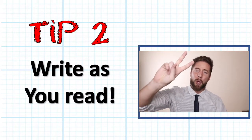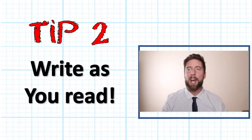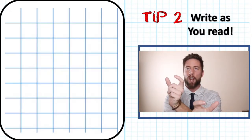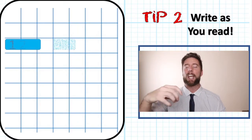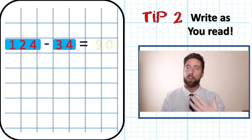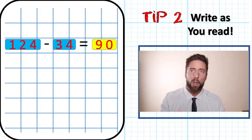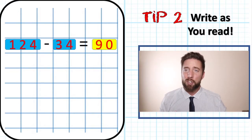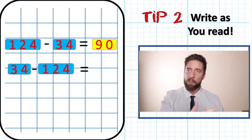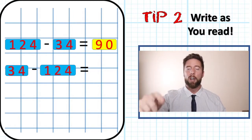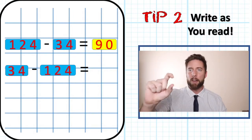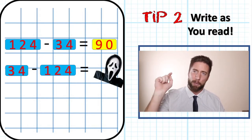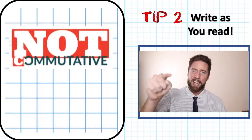Tip number two: write as you read. Remember, subtraction questions are non-commutative — you can't move the numbers in the question around. You have to write it and answer it as it is written. If it says 124 subtract 34, you have to write it 124 on the top, subtract 34. If the question says 34 subtract 124, you can't just put the bigger number on top. You have to write 34 subtract 124, knowing we are going to get into negative numbers. Tip number two: write it as you read it.